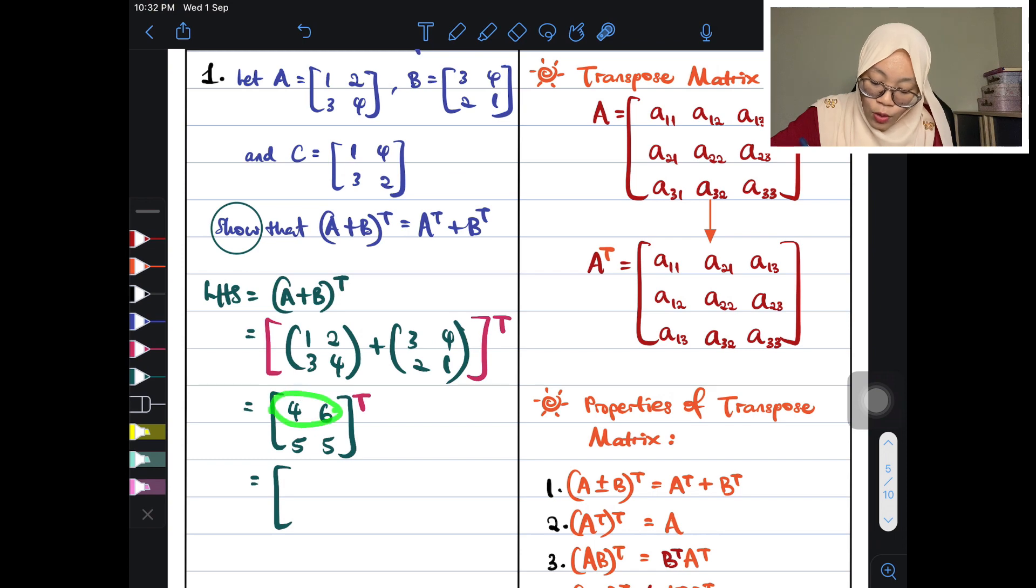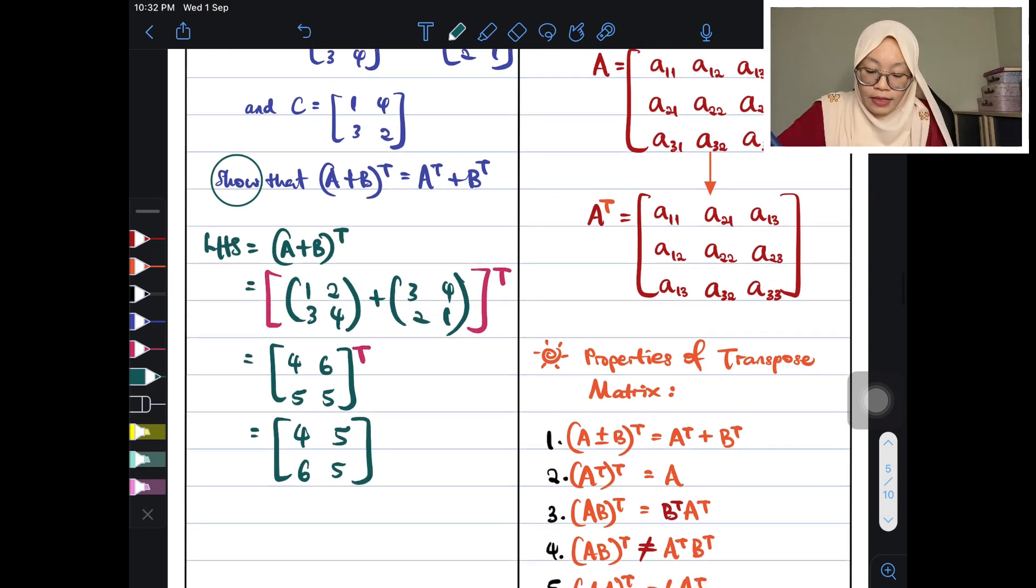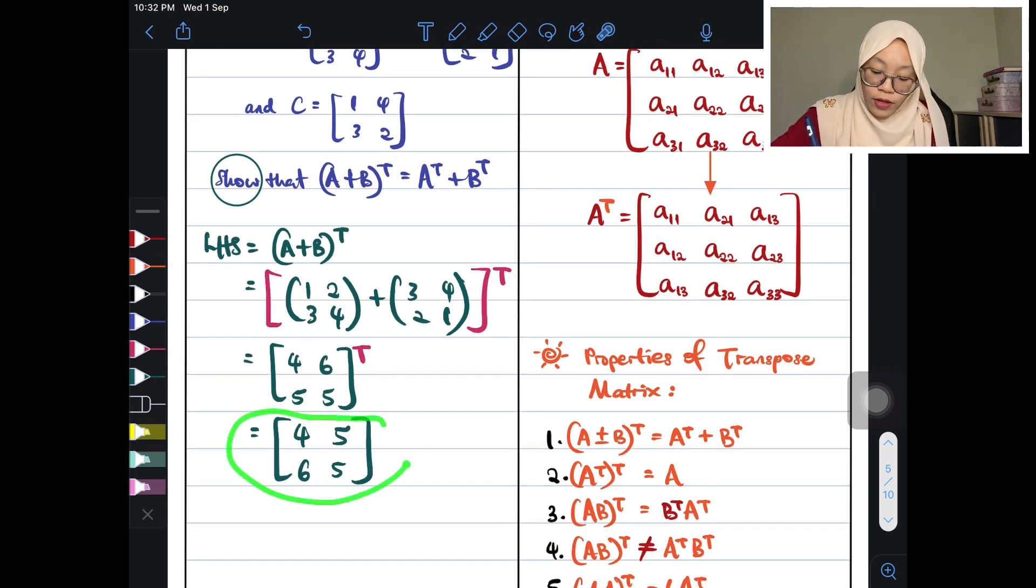And then, you transpose it. As I said just now, the row will become column. So that four and six will become column instead. So now, let's do it. Four and six. The five and five, the second row will become the second column. Easy, isn't it? Very easy. So this is where you want to see whether you will see this on the right-hand side.